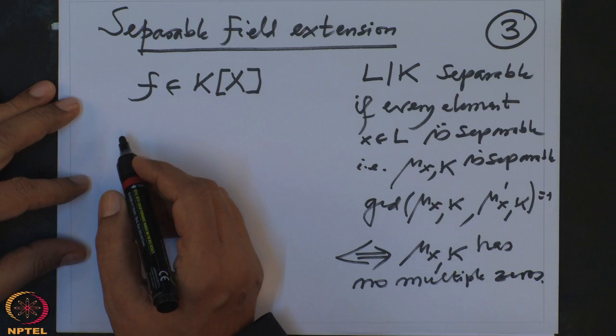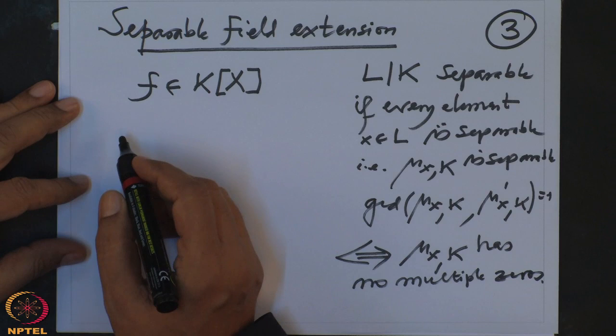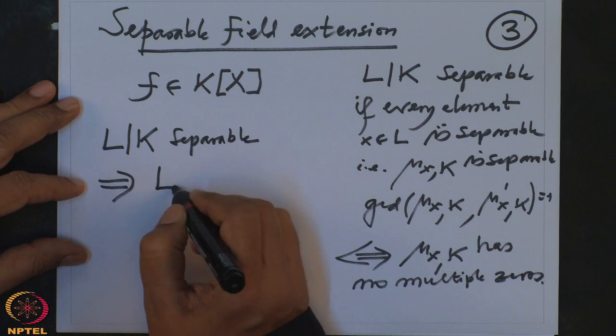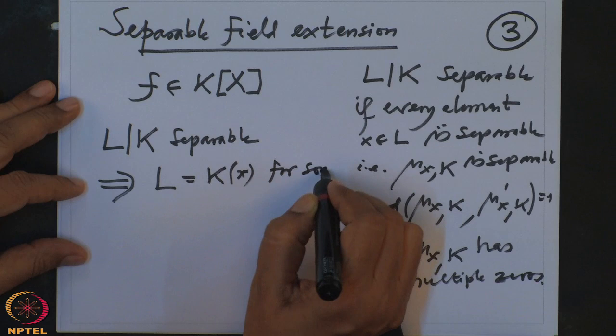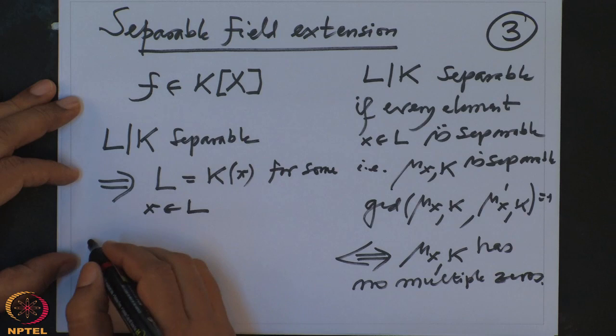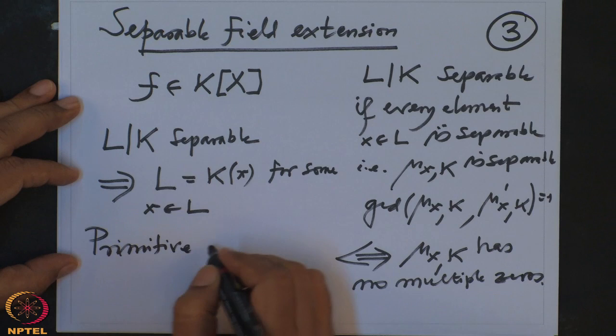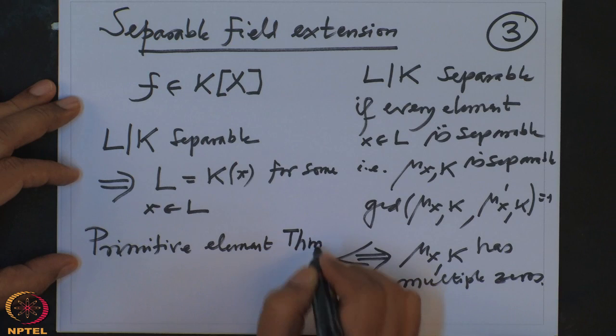The most important fact Galois used was that separable extensions have a primitive element — if L/K is separable, then L is simple, of the form K(x) for some x. This is the primitive element theorem. We also proved a primitive element theorem for Galois extensions, proved very simply using linear algebra.